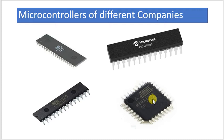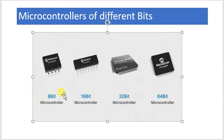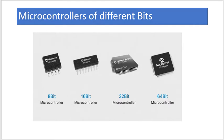Different families of microcontrollers are available, such as 8051, PIC, and AVR. Within each family there are various microcontrollers with different features. You can also see microcontrollers of different bit widths: 8-bit, 16-bit, 32-bit, and even 64-bit is available nowadays. As you go to higher bus widths, the execution speed of the microcontroller becomes faster.